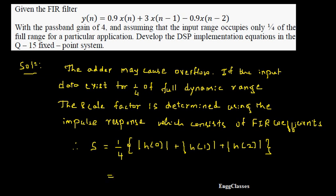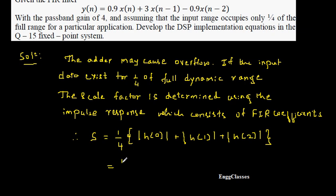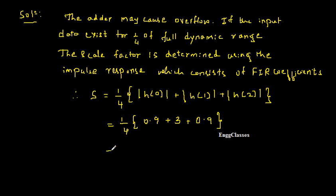Now putting in all the values: H(0) is 0.9, H(1) is 3, and H(2) is −0.9 but we take its magnitude as 0.9. So 0.9 + 0.9 = 1.8, plus 3 = 4.8, divided by 4, turns out to be 1.2. Therefore, the scaling factor S is equal to 1.2, so overflow may occur.